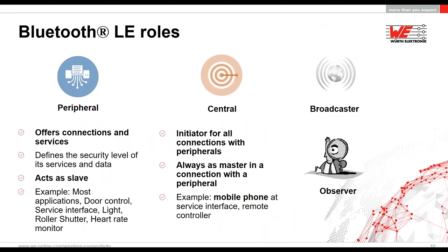There are four roles a Bluetooth Low Energy device can work in. The most important are the peripheral and central roles. The central role is usually your smartphone — it initiates a connection to another device. The peripheral role is a device that offers services and data and waits for a connection request; for example, a sensor that a smartphone connects to in order to read a temperature value. The remaining two roles — Broadcaster and Observer — are less used: a Broadcaster is a simple beacon device sending periodic beacons, and an Observer sniffs for beacons.